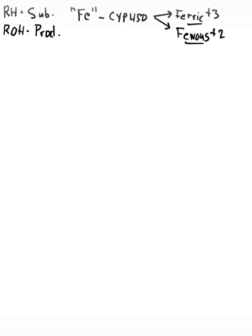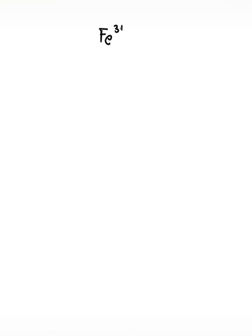Electron transfer is going to be a very important part of how all of this works. So let's start with my generic CYP450 enzyme. That enzyme in its starting or resting state is going to have the iron in its ferric, Fe3+, state. So I have my CYP450 enzyme here, and then I have the drug over here.